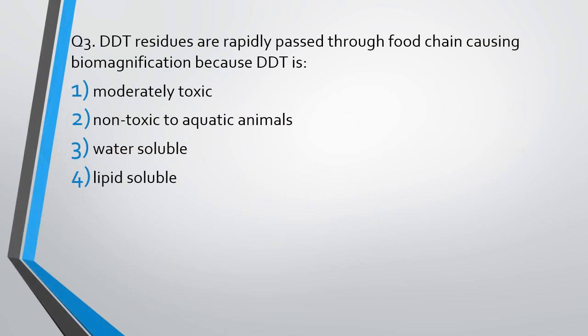Question number 3. DDT reduces or rapidly passes through the food chain causing biomagnification because DDT is: moderately toxic, non-toxic to aquatic animals, water-soluble, or lipid-soluble. The correct answer is option 4 — DDT is lipid-soluble.